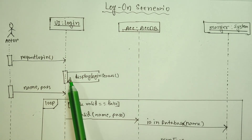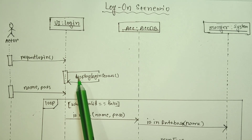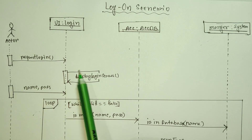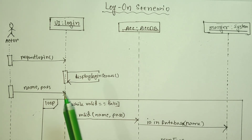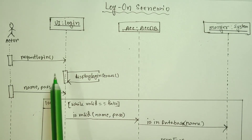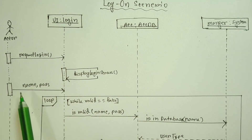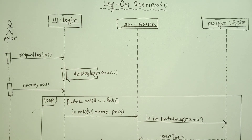The UI displays the login. The login tab shows name and password — this is the user interface display screen. This is a self-message. Then the user interface takes the name and password input.